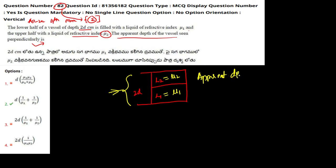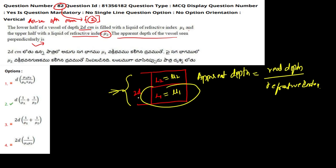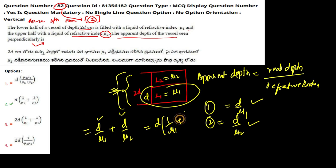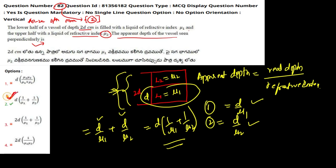We know that apparent depth equals real depth divided by refractive index. So for the first half, it is d upon mu1, and for the second part it is d upon mu2. For the total apparent depth it will be d upon mu1 plus d upon mu2. Taking d common, that gives d into (1/mu1 + 1/mu2), which is your answer — option number 2 is the correct answer.